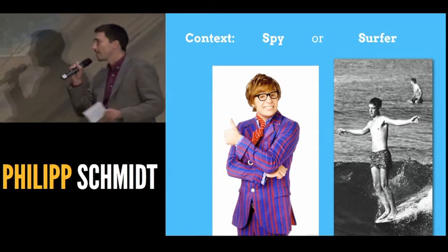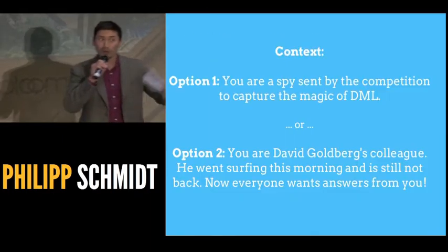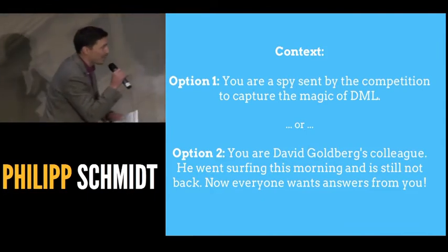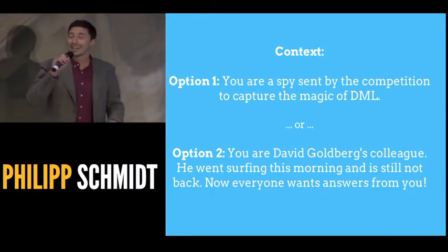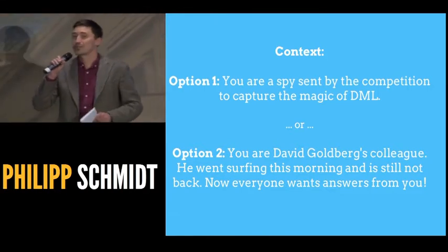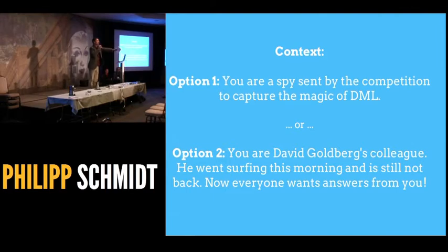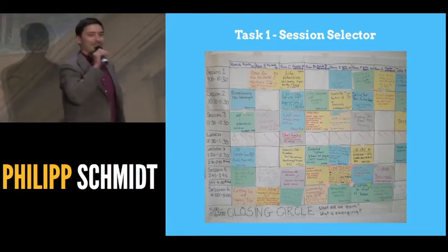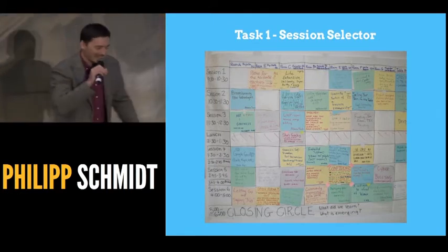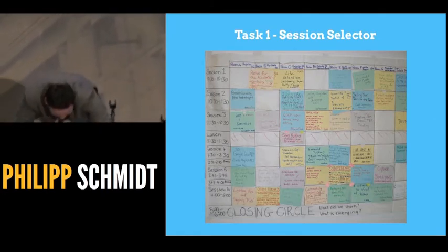First, we need to set the context. Option one: you are a spy sent to the DML conference to find out what is the magic sauce that makes it so much better than all the others. Option two: you work with David Goldberg — he went surfing this morning and still hasn't returned, and everyone looks to you for help. Option one? Option two? Okay, we need clear decisions here.